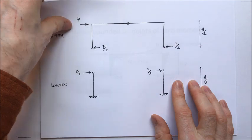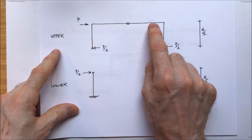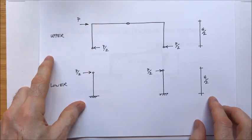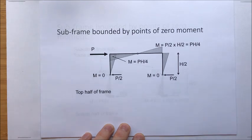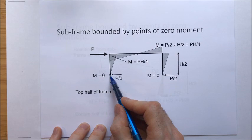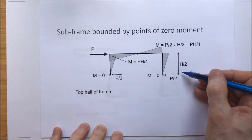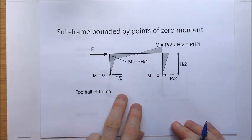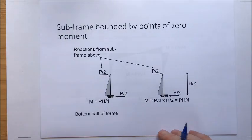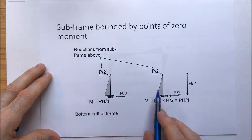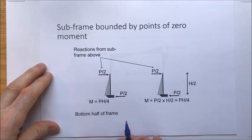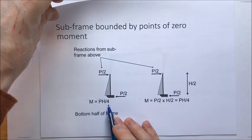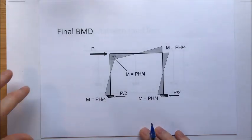We can work out the bending moments at that point. The internal shear exposed at the pin is P/2 and the length of the member is H/2, so the bending moment is P/2 × H/2 = PH/4. We know it's drawn on the tension face. This is the top half of the frame. The bottom half is even simpler — we have the internal shear of P/2 acting at a height of H/2 above the fixed base, developing a bending moment of P/2 × H/2 = PH/4. We then combine the two frames together and the bending moments to create the final bending moment diagram.